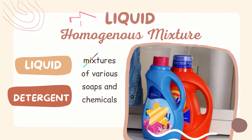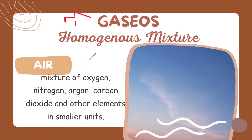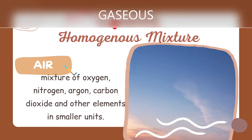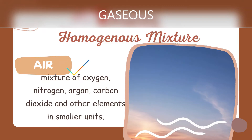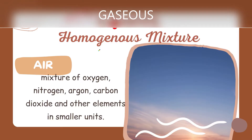The next one is gaseous homogeneous mixture. The best example is air. This is a mixture of oxygen, nitrogen, argon, carbon dioxide, and other elements in smaller units. So we can have this inside and outside our home. Air is the best example of a gaseous homogeneous mixture.